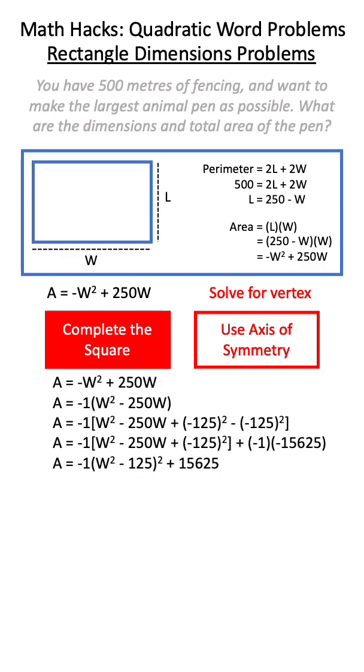If we complete the square on this relationship, what we see is that we get a vertex, which is width and area, of 125 by 15625.